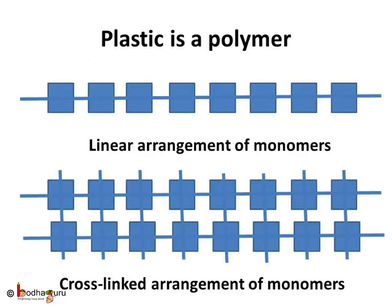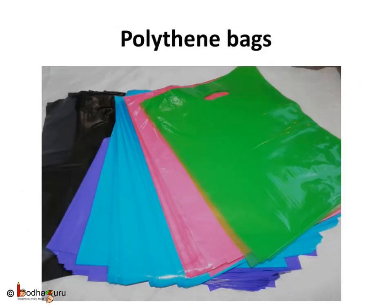Plastic is actually a polymer like synthetic fiber. In few plastics, monomers are arranged in a chain like beads in case of a necklace. In few plastics, monomers are cross-linked instead of the linear arrangement. Polythene, i.e. poly plus ethene, is an example of a plastic. It is used for making commonly used polythene bags or plastic covers.